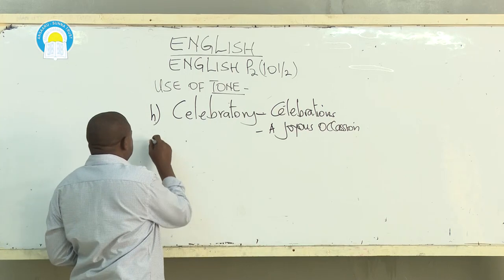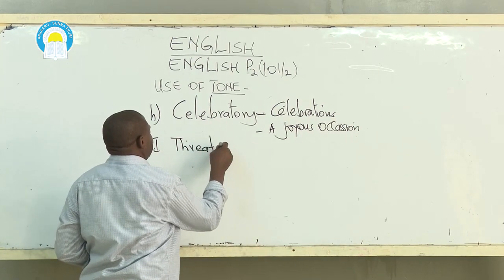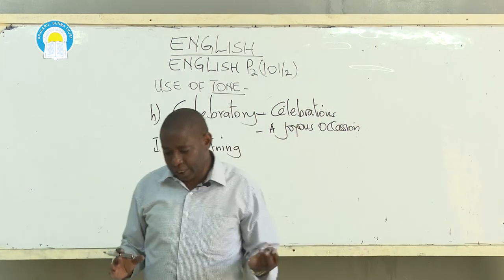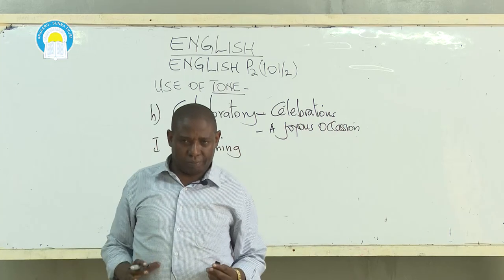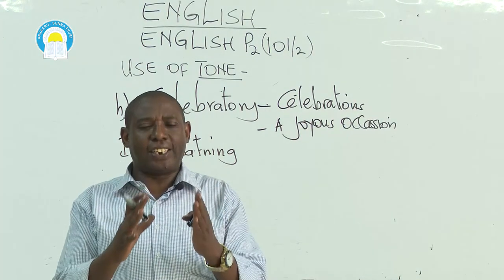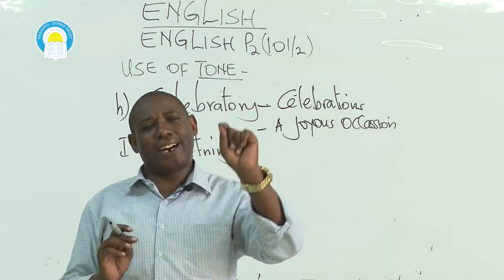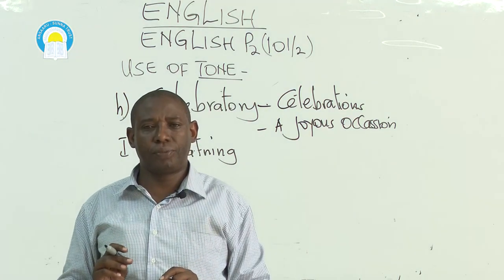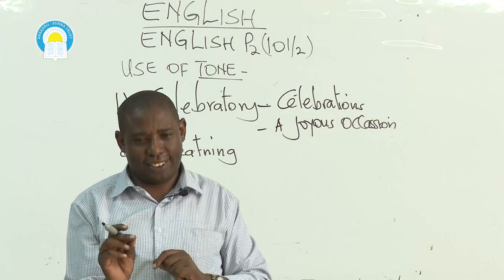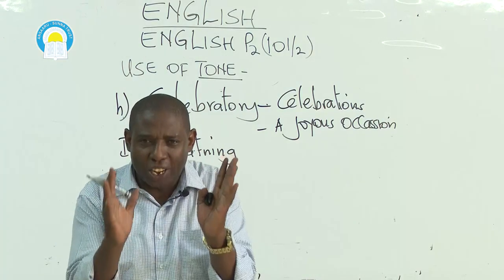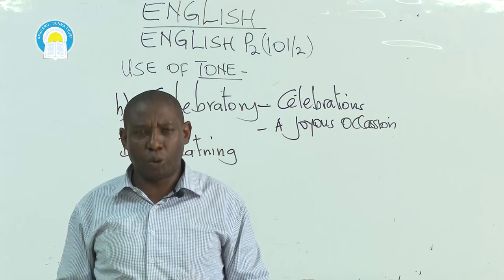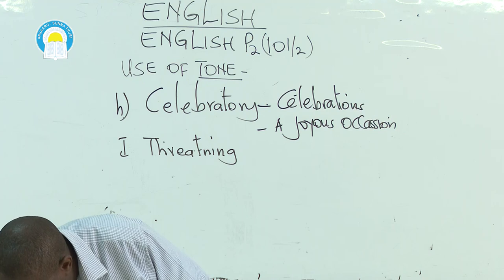Next is threatening tone. When a character is talking in such a way that they are threatening someone, nothing captures this better than the incident when Tayo's aggressors are attacked by a mob, and these were the attacker's parting words: 'You have not yet seen the last of me.' There is a threatening tone, and when reading those words you use a threatening tone.